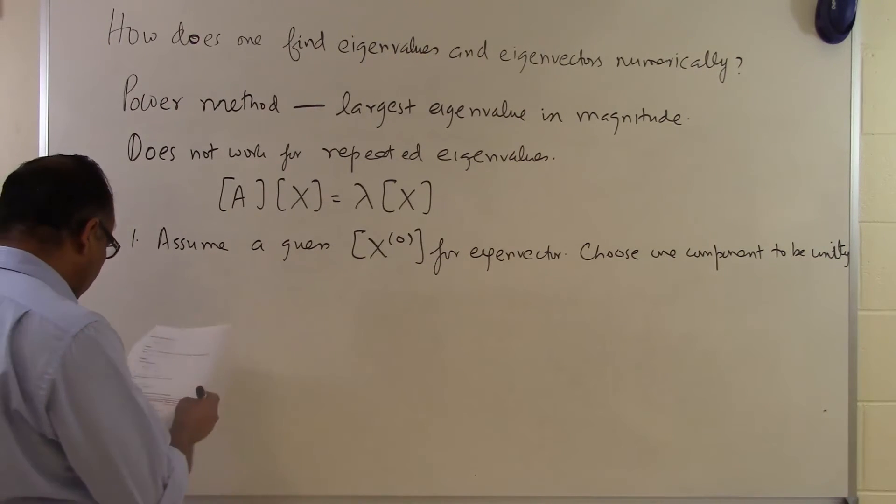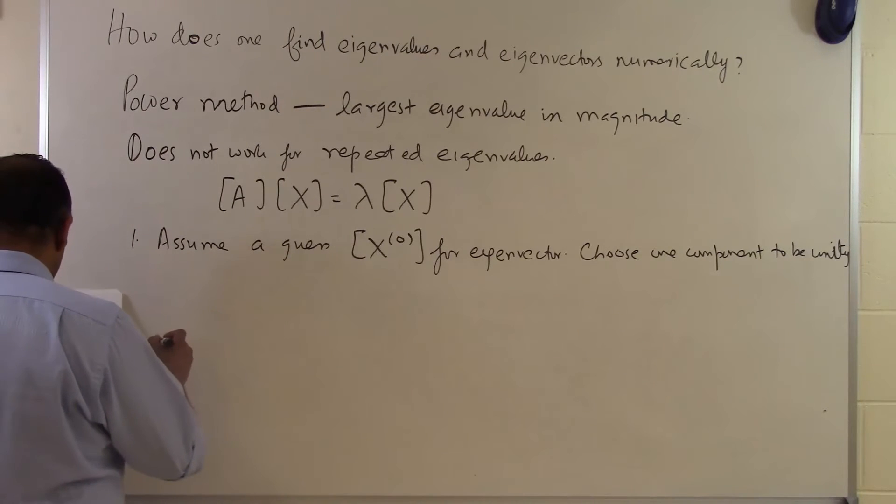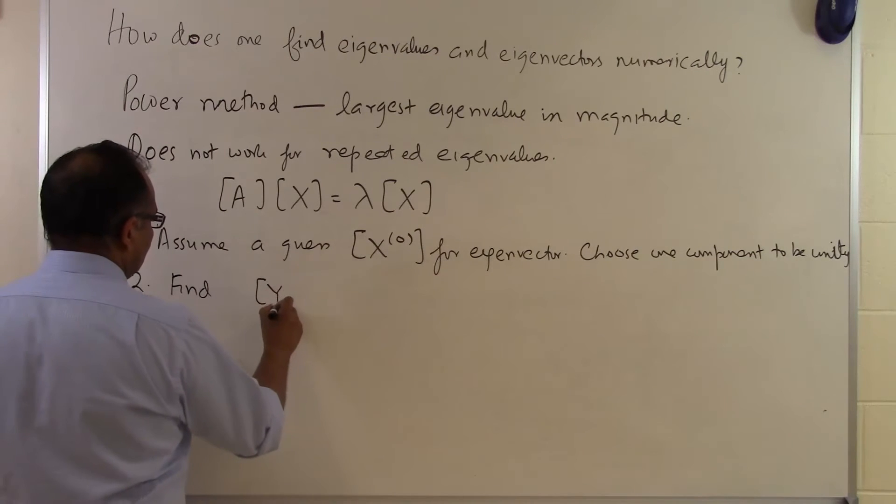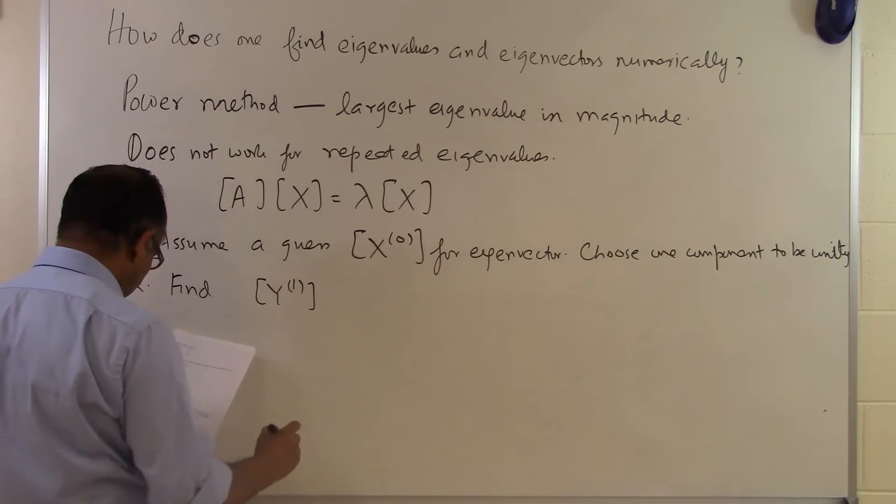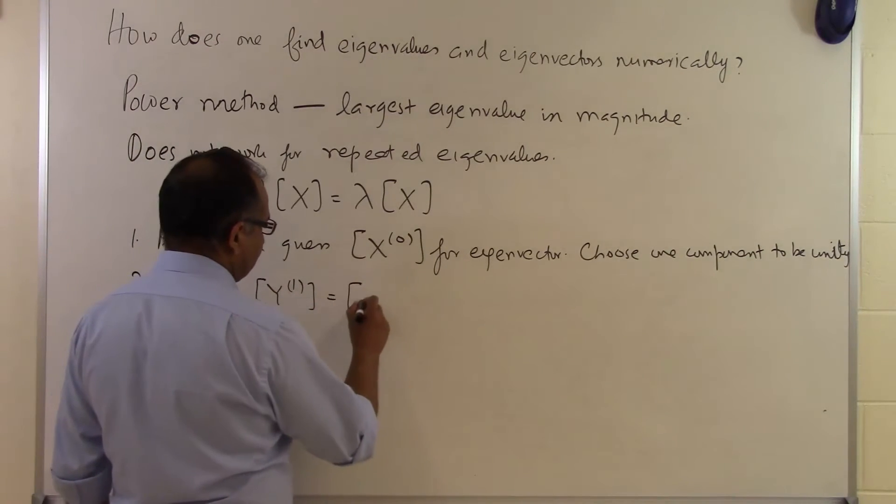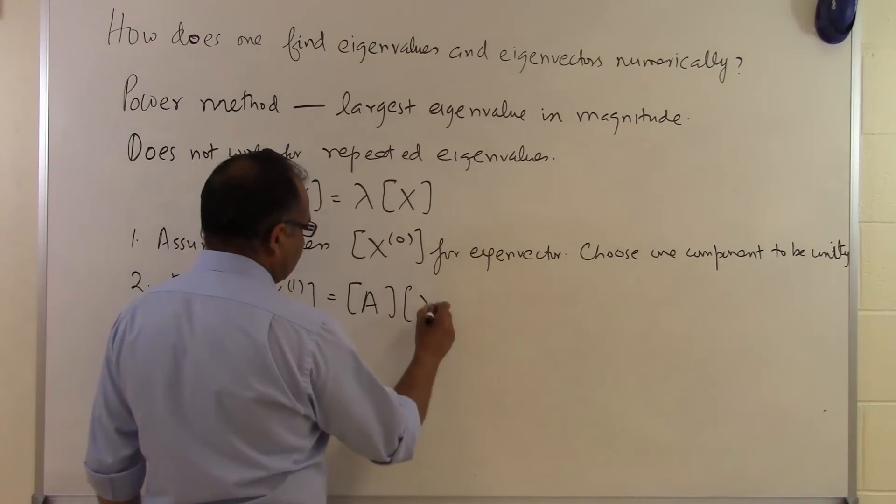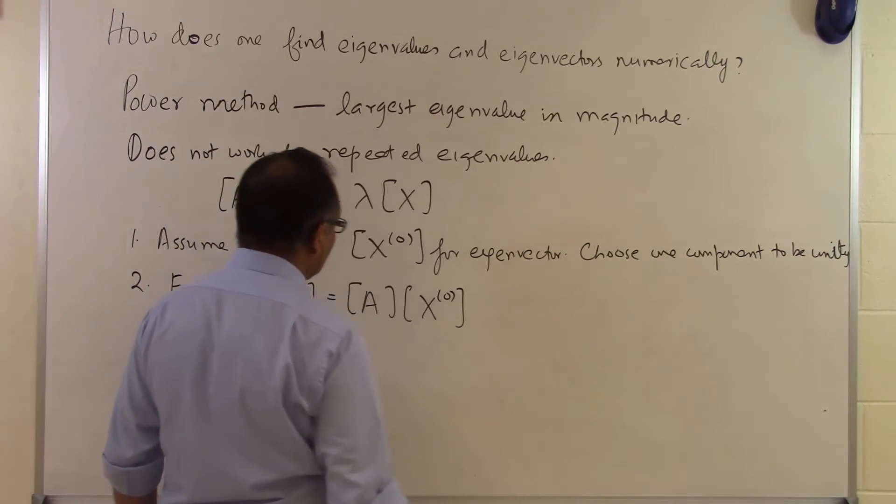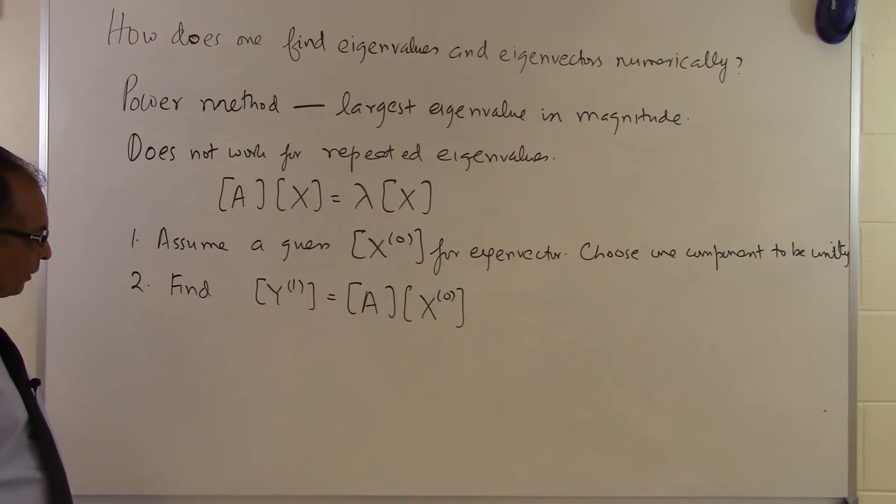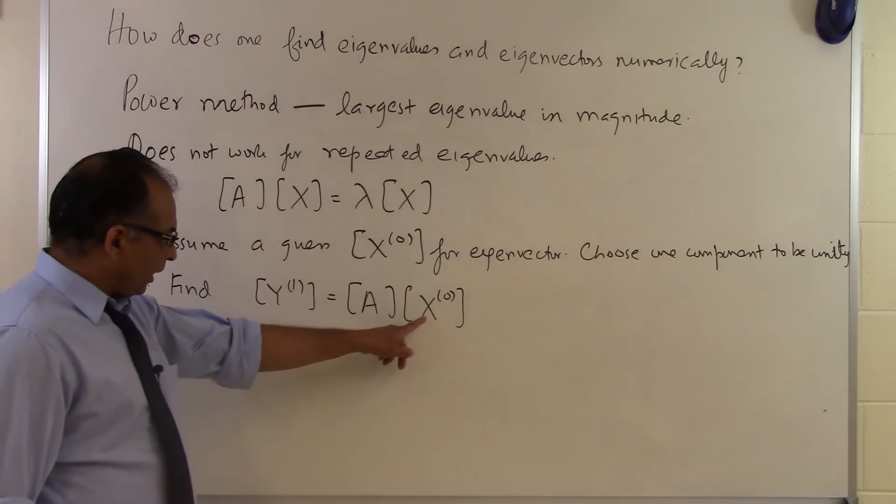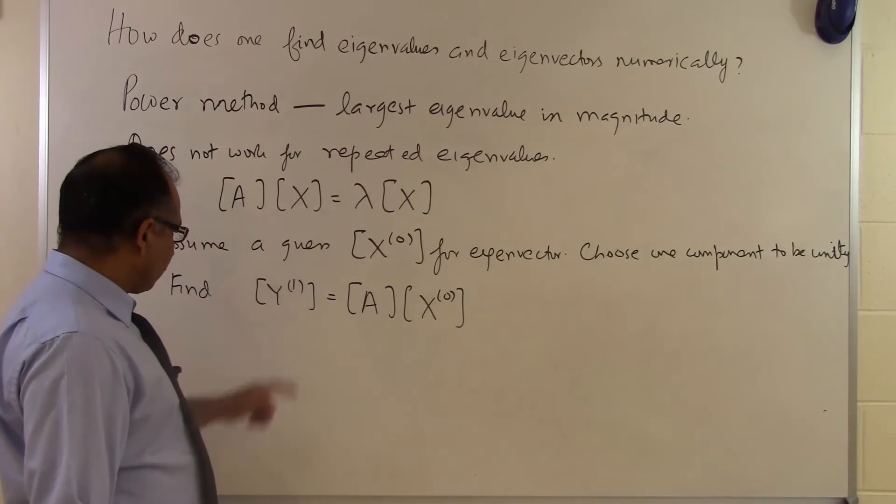Once you've chosen that to be 1, you're going to find y₁, another vector, which will be found by simply taking the x₀ vector you just assumed as your first estimate for the eigenvector. You're going to multiply x₀ by A and get y₁.